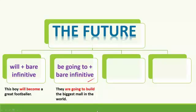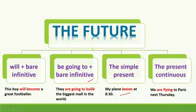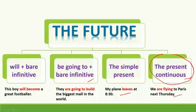A third structure is the simple present — for example: 'My plane leaves at 8:30.' Another way of expressing the future in English is with the present continuous — for example: 'We are flying to Paris next Thursday.' And it is this structure that we are going to focus on today.